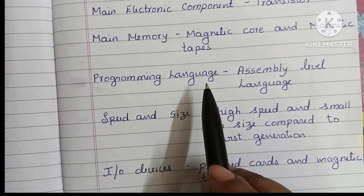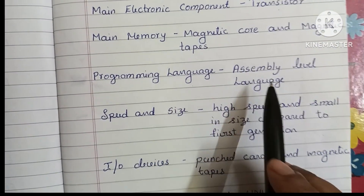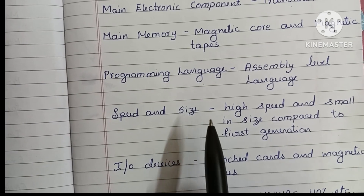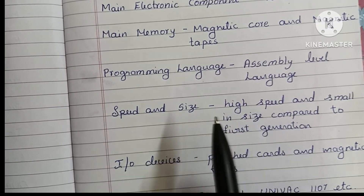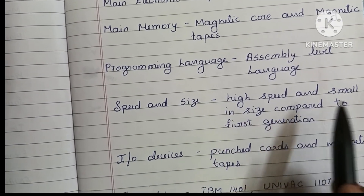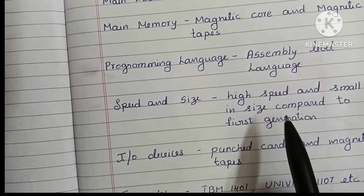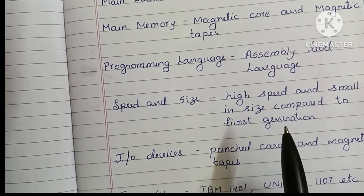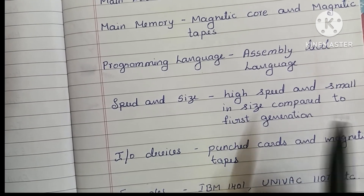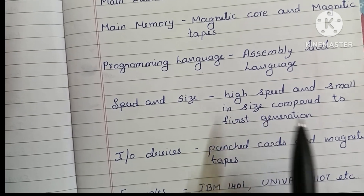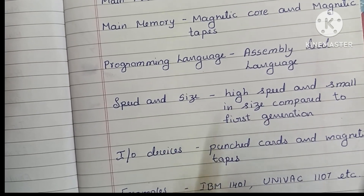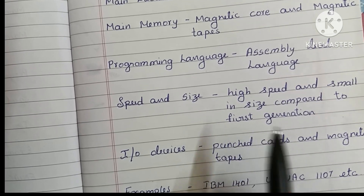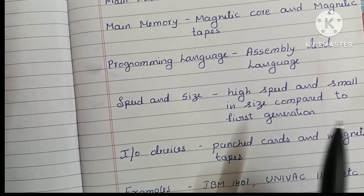The programming language used is assembly level language. The speed and size of second generation computers: speed is high and the size is small compared to the first generation of computers, where the size was very huge and speed was very slow.